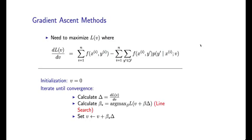So here's a first sketch of a gradient ascent method, and it works as follows. So our goal is to maximize this function L where the derivatives take the following form.